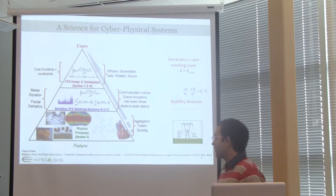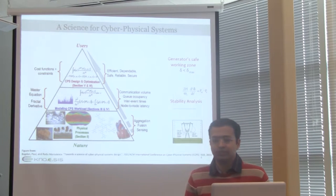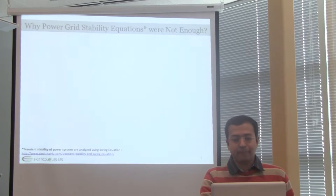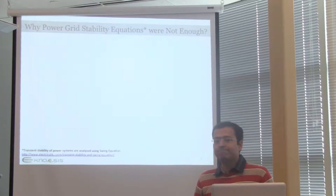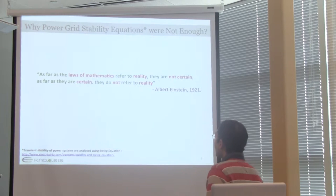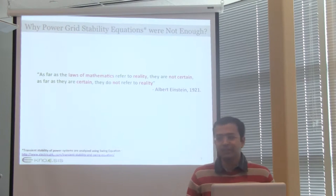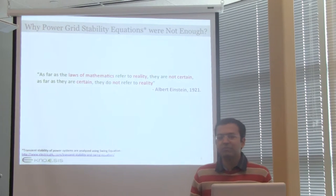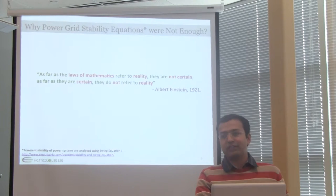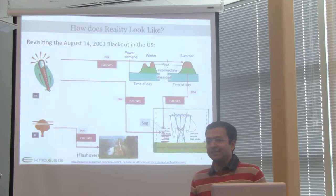The power grid has some stability analysis and stability equations, and there is a safe working zone for this particular power grid. So why were those equations not enough in this case? Just because I know how the system behaves in transient conditions — that's probably good enough to understand transient conditions. But what is missing? This relates to a quote from Albert Einstein about mathematical equations and precision: when mathematical equations are given for physical processes, they can't be certain, but when they are certain, they don't refer to reality. If the equations don't really capture reality, what is reality?